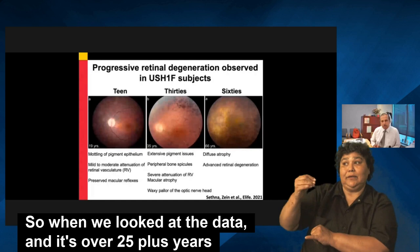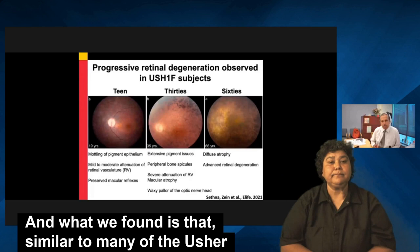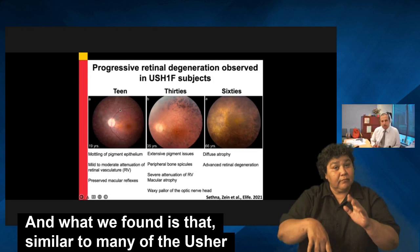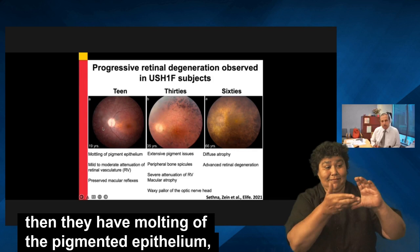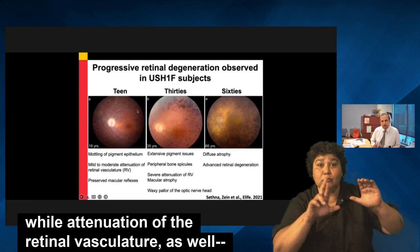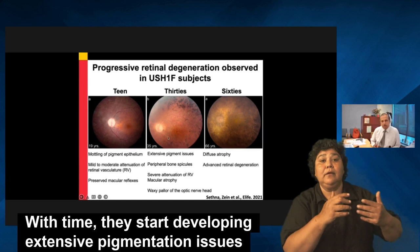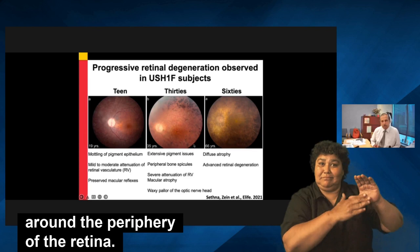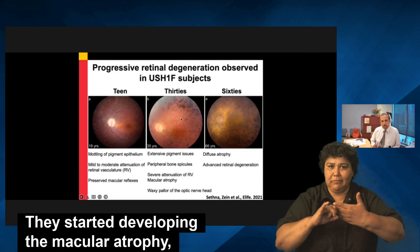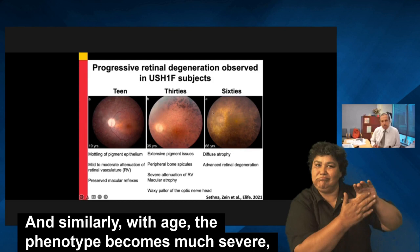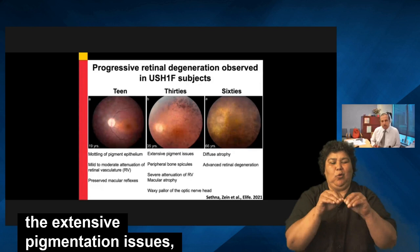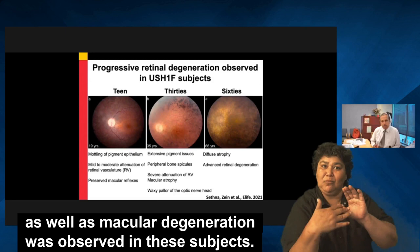When we looked at the data — mined over 25 plus years — what we found is that, similar to many Usher type 1 phenotypes, progressive retinal degeneration was observed. When subjects are in their teenage years, they show mottling of the pigmented epithelium, mild attenuation of the retinal vasculature, but preserved macular reflexes. With time, they develop extensive pigmentation issues around the periphery of the retina, severe attenuation of the retinal vasculature, macular atrophy, and pallor of the optic nerve head. With further aging, the phenotype becomes much more severe, with advanced retinal degeneration, extensive pigmentation, and macular degeneration.